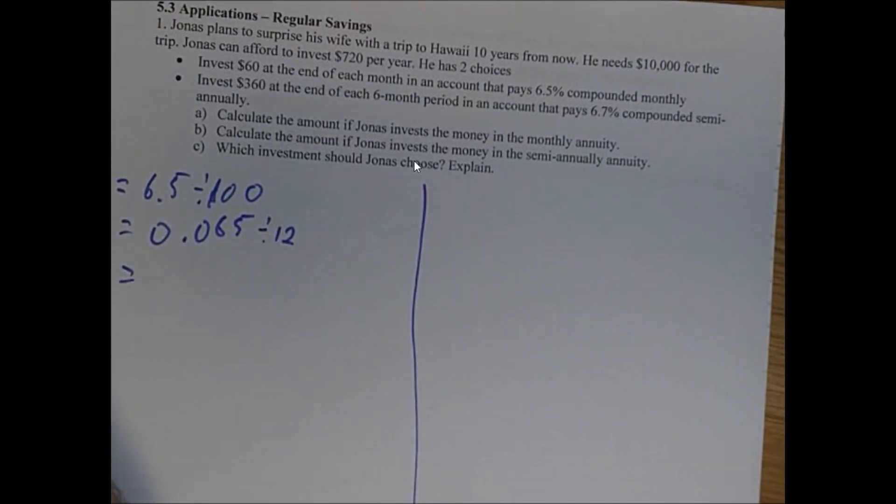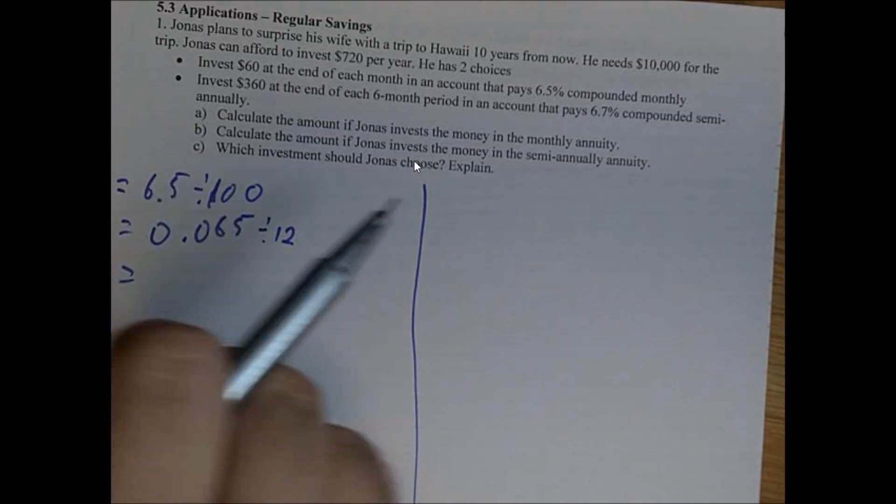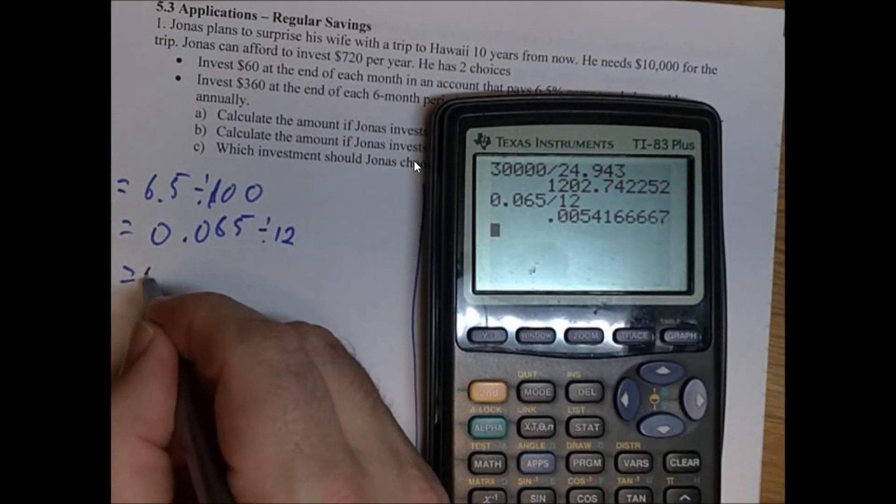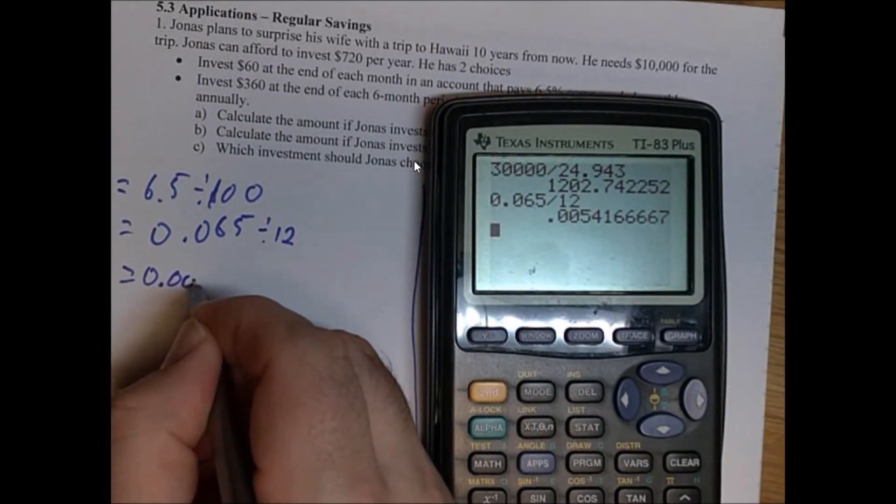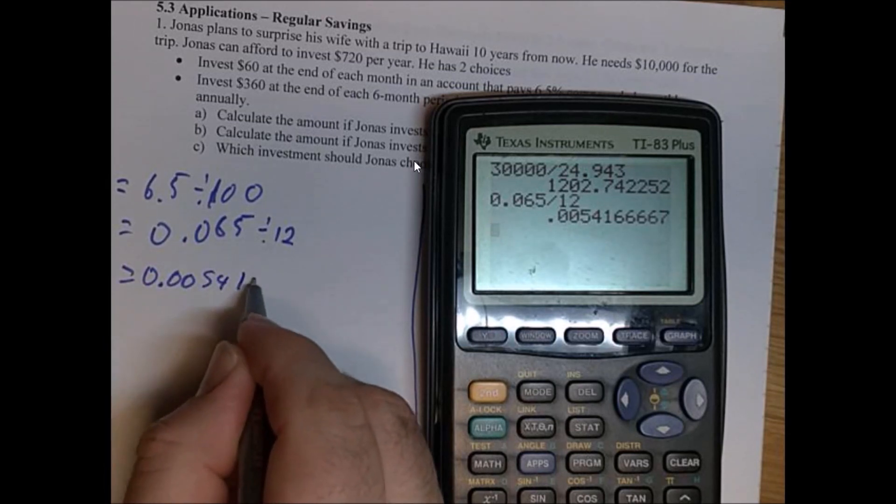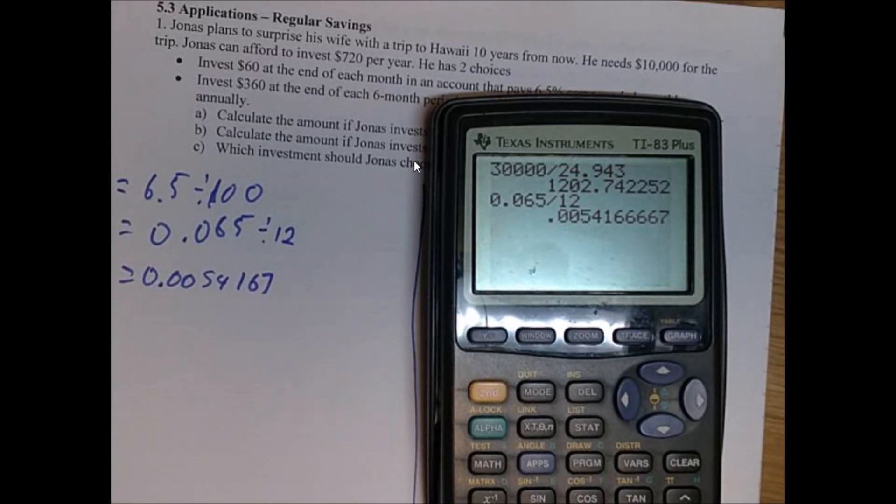So 0.065 divided by 12. And you get this weirdo number. So I'll show you guys. Okay, I divide it by 12. I get 0.0054167. I'll go that far.